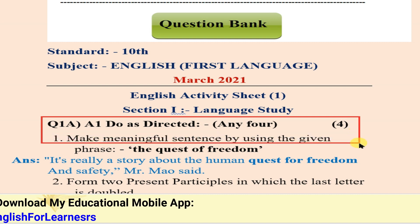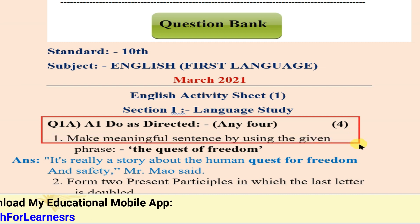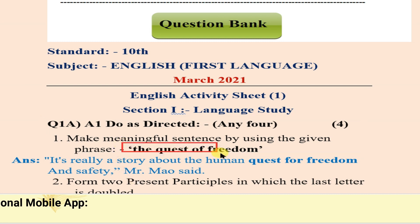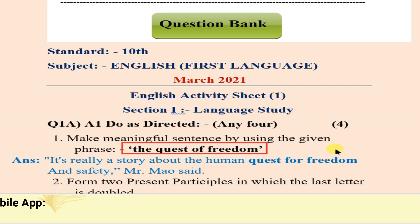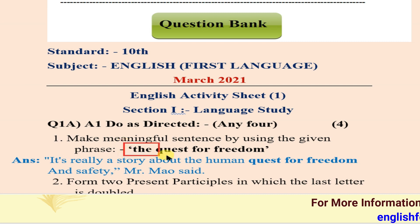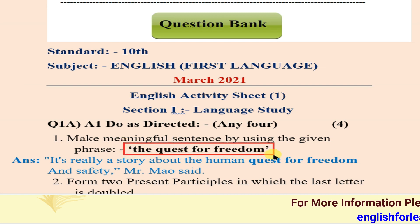Number one: make a meaningful sentence by using the given phrase — 'the quest for freedom.' Here you are given this phrase and you have to use it in your own sentence. First of all, you should know the meaning: the quest for freedom means to struggle for freedom.